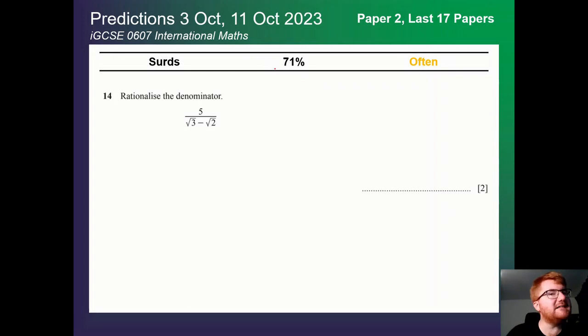Surds, again, has come back slightly, I think, over the last three or four papers. Those typical topics of rationalising denominators comes from a pretty recent paper, so make sure you're able to do that, as well as simplifying surds. And if you need any revision on that, check out the video above.